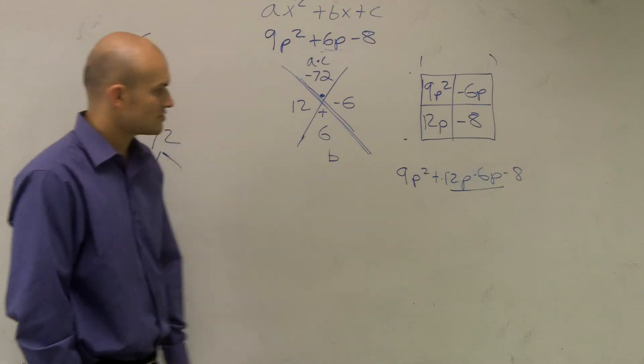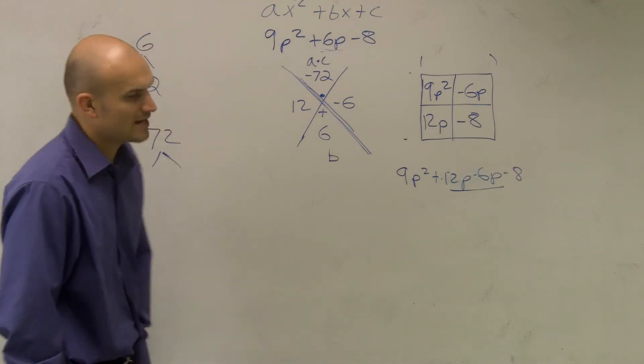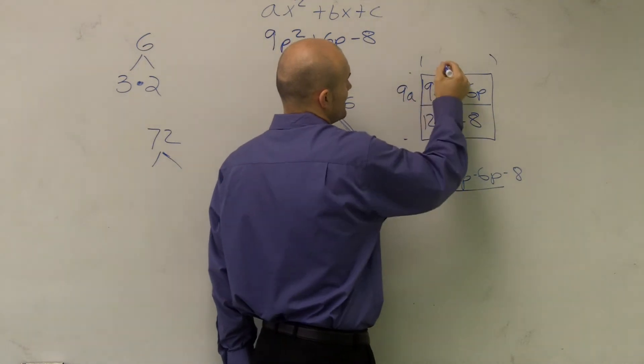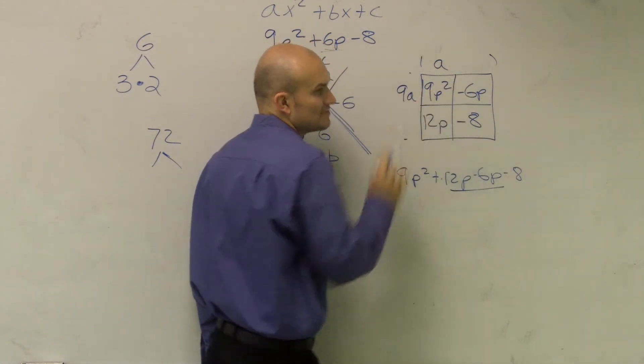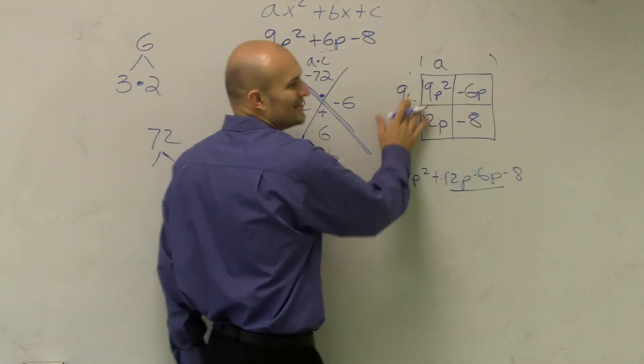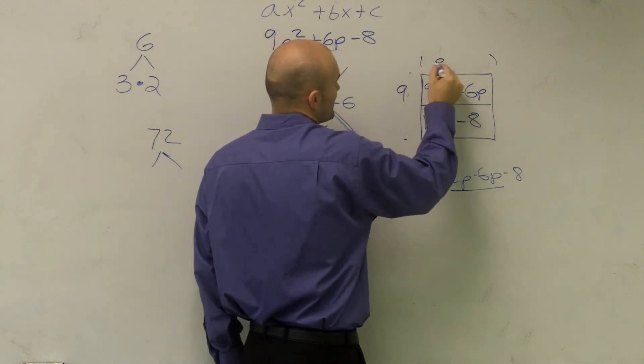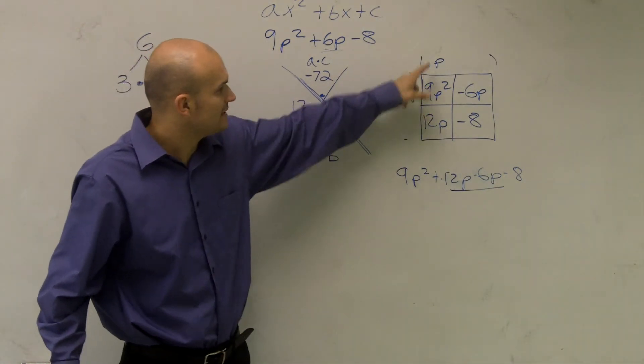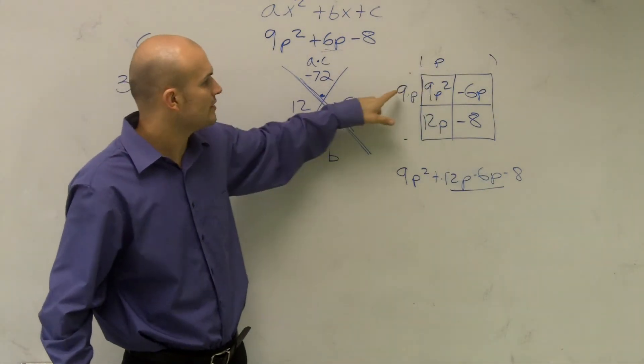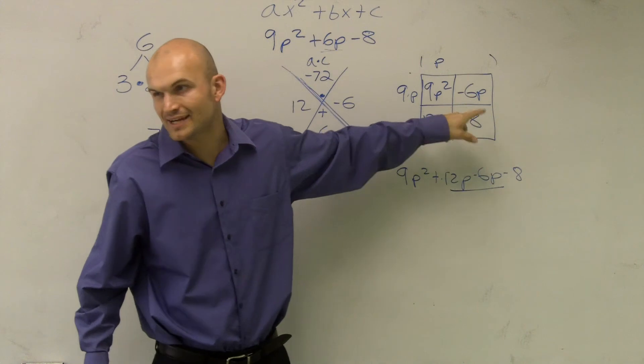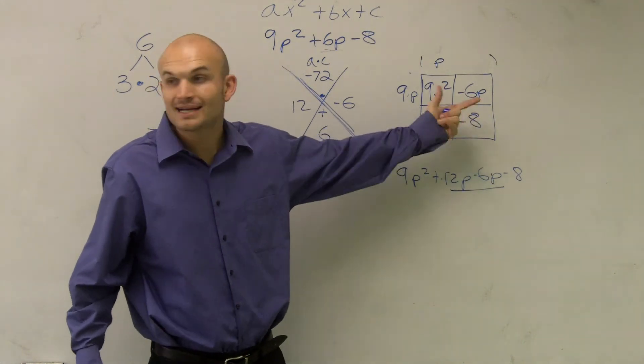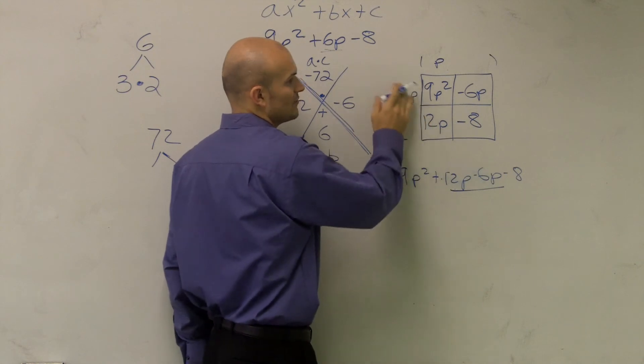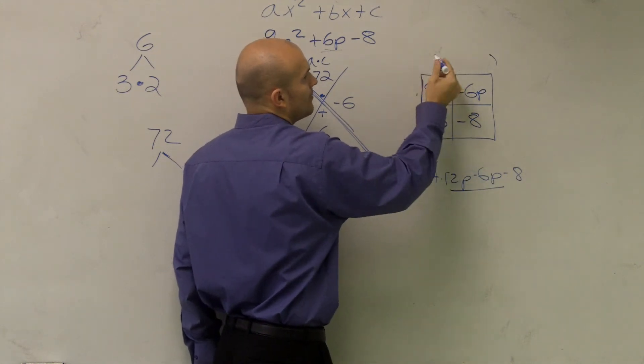because what we want to do is we want to find the two binomials. We want to find what two binomials multiply to give me this area. So what we're going to do is we're going to start with our first one. And we have two options. We can say 9p times p. 9p times p gives you 9p². I don't know where the a came from. I can do 9p times p. 9p times p gives you 9p². However, 9p times what gives you a -6p? Not an even integer. And right now we're not going to be working with any kind of fraction. So that's not going to work.